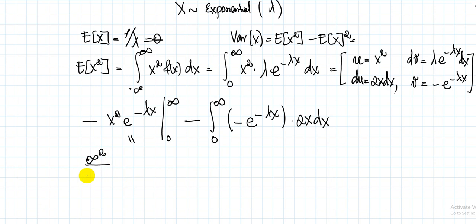Evaluating the limits: as x approaches infinity, infinity squared divided by e to the power of lambda times infinity equals 0, because the exponential grows faster than any polynomial. At x = 0, it is 0 times e to the power of 0, which is 0. So the boundary term evaluates to 0.